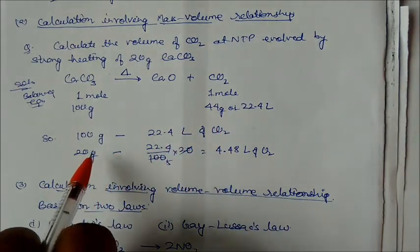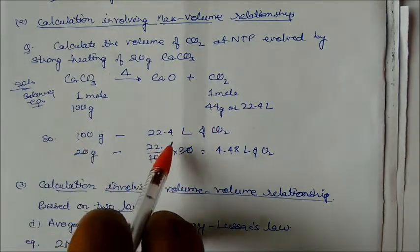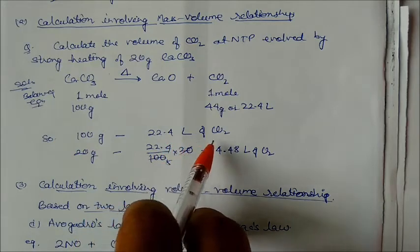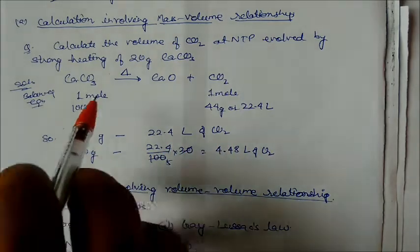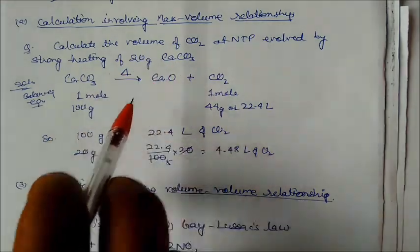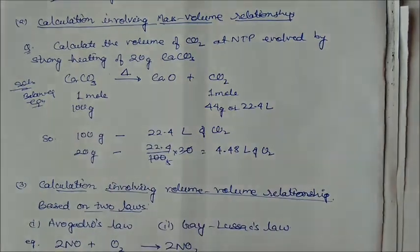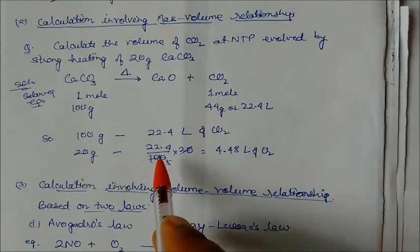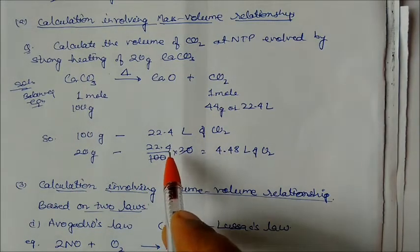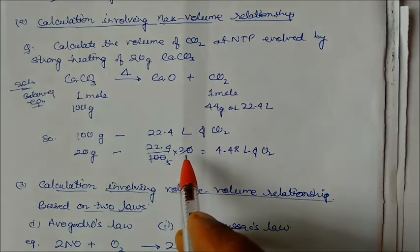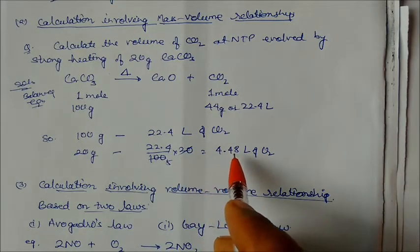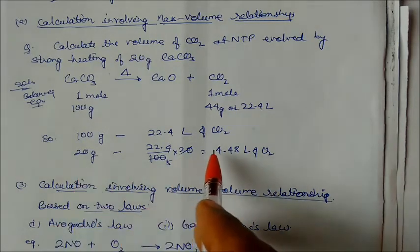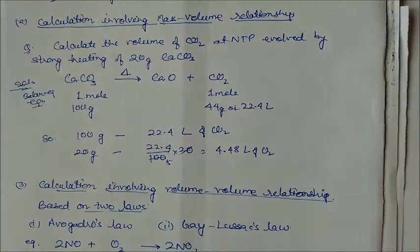So 100 grams of CaCO₃ gives 22.4 liters of CO₂. We are given 20 grams of CaCO₃, so: volume = (22.4 / 100) × 20 = 4.4 liters of CO₂. This is the mass-volume relationship.